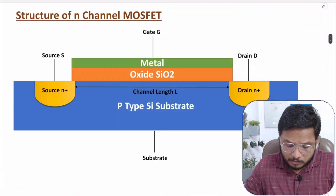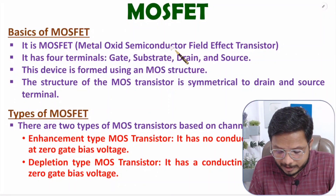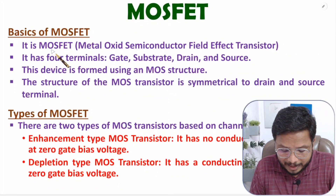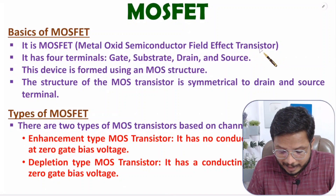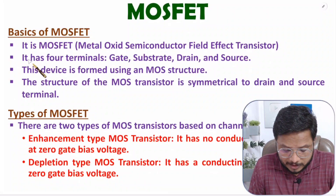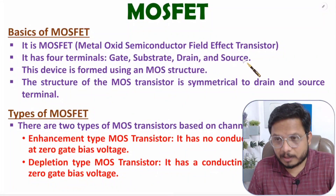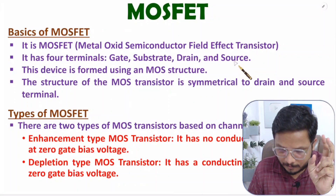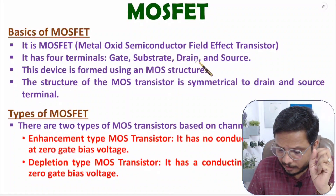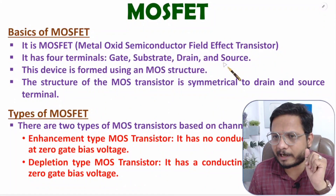MOSFET means Metal Oxide Semiconductor Field Effect Transistor. This MOSFET has four terminals: gate, substrate, drain, and source. In the MOSFET structure, we have two terminals — gate and substrate. To form a transistor using the MOSFET structure, we need two additional terminals: drain and source. I will show you that in the structure, which will give you more clarity. The structure of the MOSFET transistor is symmetrical with respect to drain and source.